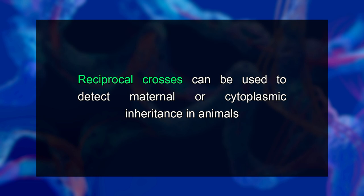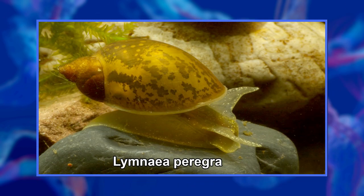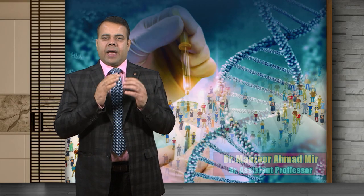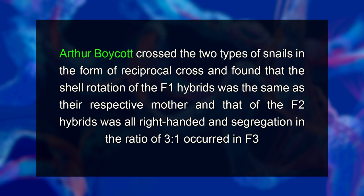Opposite mating types were shown to develop from identical genotypes, and in some species, mating types even proved to be cytoplasmically transmitted to sexual progeny. Reciprocal crosses can be used to detect maternal or cytoplasmic inheritance in animals. The example of maternal influence was reported by Arthur Boycott in 1930, who was studying morphological features of the freshwater snail Limnaea peregra. In snails, the shell and internal organs can be arranged in one of two directions: right-handed (dextral) and left-handed (sinistral). Boycott crossed the two types of snails and found that the shell rotation of F1 hybrids was the same as their respective mother, F2 hybrids were all right-handed, and segregation in the ratio of 3:1 occurred in F3 generation.